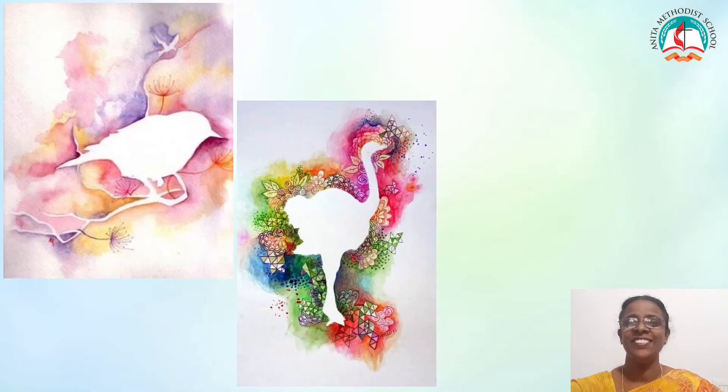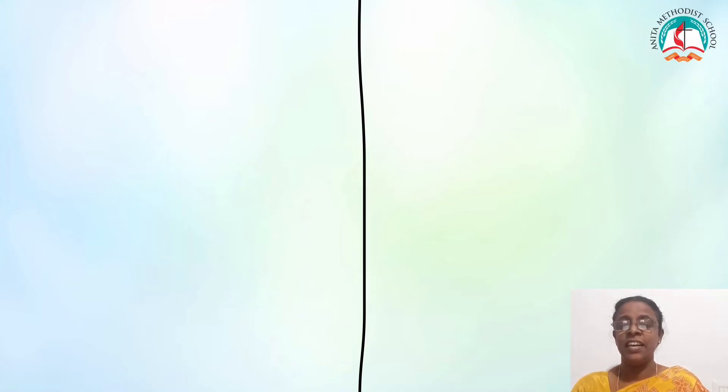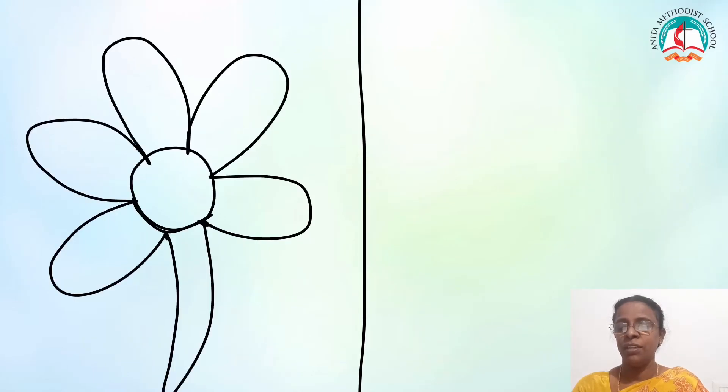Now, take a paper, a pencil and your coloring materials to draw this art. First, we are going to draw a positive space art. The first step is to draw a flower with a minimum of 5 petals.